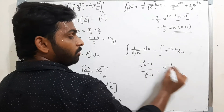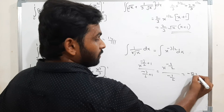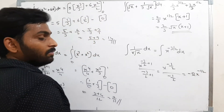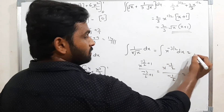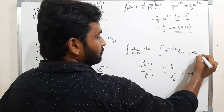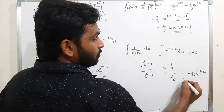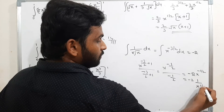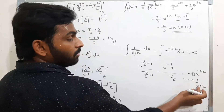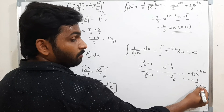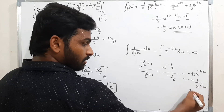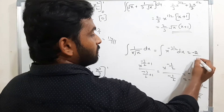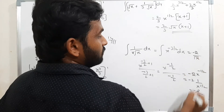When -1/2 in the denominator goes to the numerator it becomes -2. So we get -2x^(-1/2). Since x^(-1/2) in the denominator becomes x^(1/2) = √x, the integration of 1/(x·√x) is -2/√x.